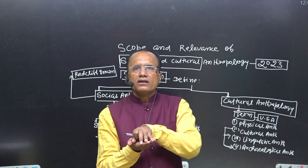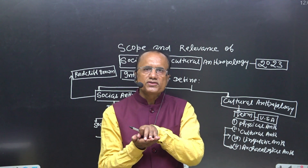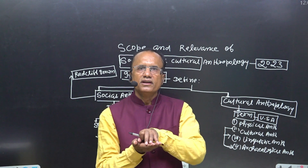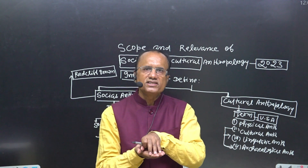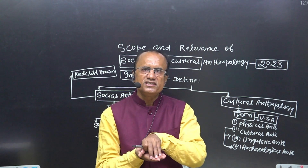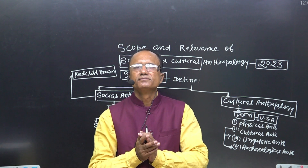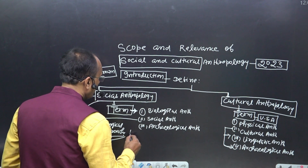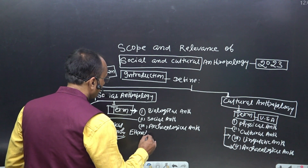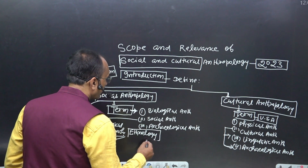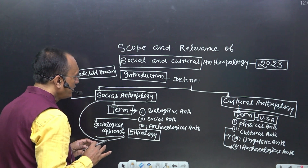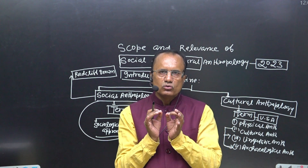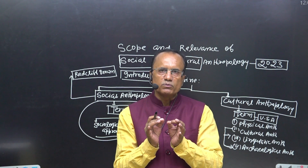In social Anthropology, Anthropology is focused on the study of society — its social structure, social organization, social institutions, political organization, economic organization, religion, customs, tradition, and so on. In the 19th century, it was generally known as ethnology. So society was the core concern of social Anthropology — we study the social processes of society.